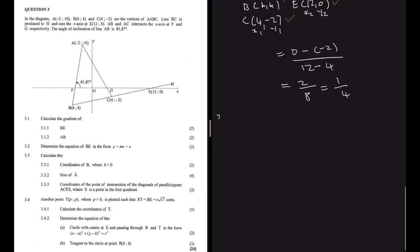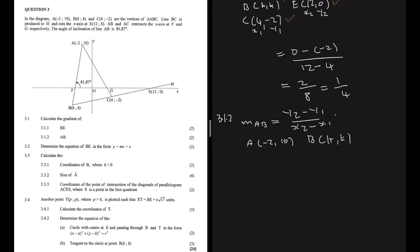Question 3.1.2 says calculate the gradient of AB. We know A is made out of (a minus 2) and 10, and B is made out of k and k. We cannot use the formula y2 minus y1 divided by x2 minus x1, because not only does B consist of unknown values, there is no other point on AB to substitute instead, so we cannot do what we did in 3.1.1.